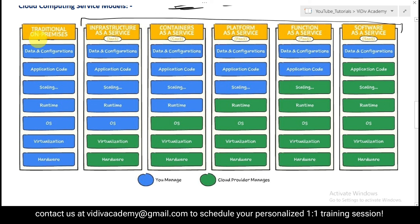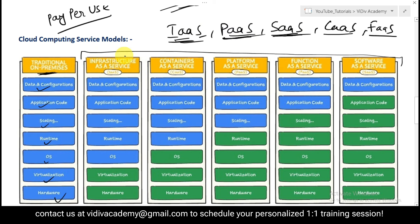In the diagram, blue represents what you have to manage and green represents what the cloud provider manages. With traditional on-premise, you manage everything: hardware, virtualization, OS, runtime, scaling, application code, data, and configuration. But if you opt for any cloud computing provider — AWS, Azure, or GCP — they provide various service options.